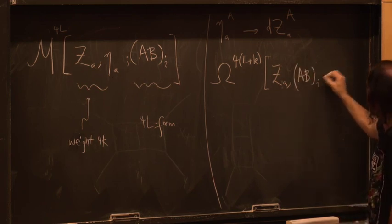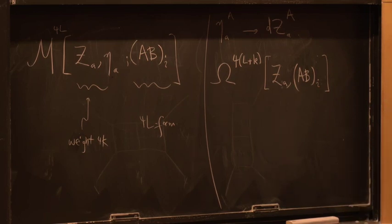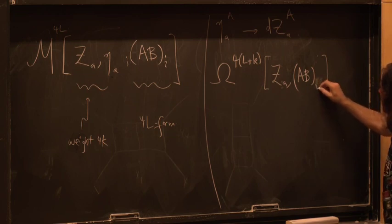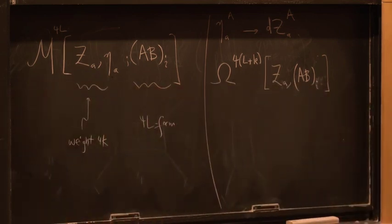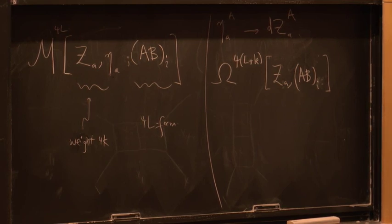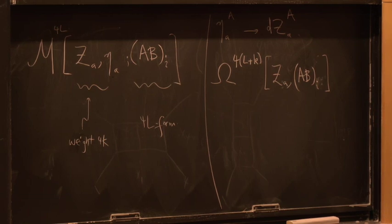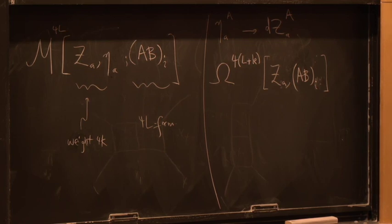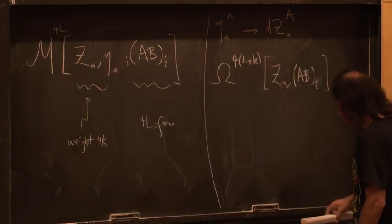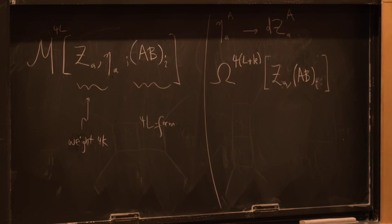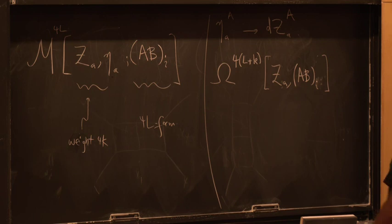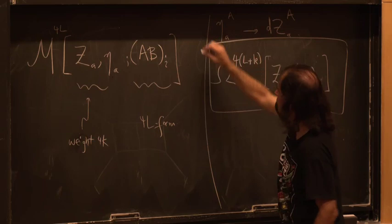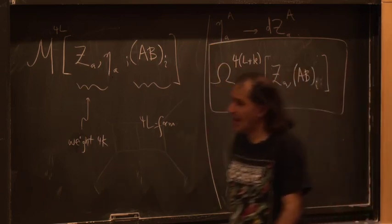That's the object we're going to try to understand. We're not going to do loop integrations for a while, but we'll get tree-level results first. At loop level, we keep the dependence on the loop points and integrate later. There's a lot we can understand about the emergence of locality, unitarity, and related properties at this more primitive level, before carrying out the loop integration. This is going to be the star of the show.